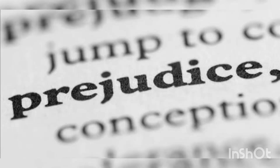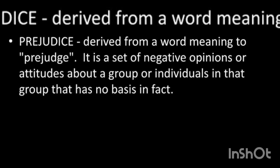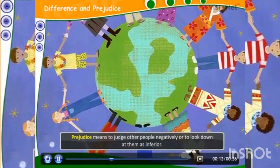There are different kinds of people existing on various grounds, and these lead to Prejudice. Prejudice means to judge other people negatively or see them as inferior. It is a set of negative opinions or attitudes about a group or individuals — that means judging other people negatively or seeing them as inferior.